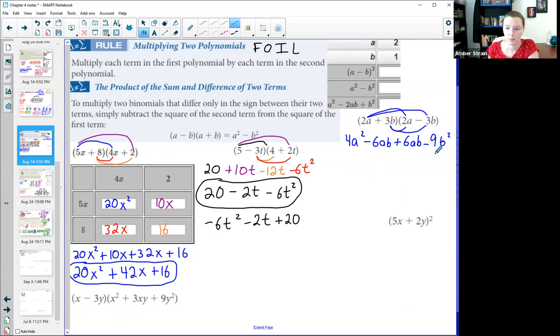Now I'm going to look for my like terms. There's no other a squares. There's no other b squares. But right here I have minus 6ab plus 6ab. So be careful, I don't write ab. That would imply there's one of them. Minus 6 plus 6 is 0. They've completely canceled. So the final answer is only 4a squared minus 9b squared.